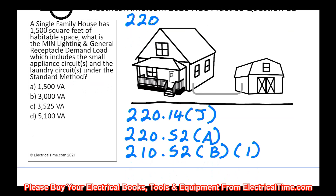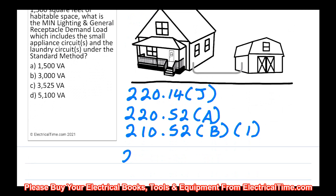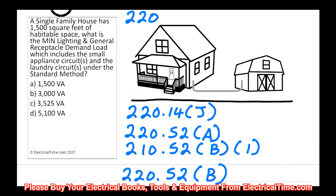Now let's look at 220.52B, which talks about the laundry circuit — not less than 1,500 volt-amps. When we're looking at a dwelling unit and talking about the minimum VA demand load, we're going to take that square footage. We're looking at the minimum for the lighting and the general receptacle demand load. In this question, we don't have the appliances, heating and air conditioning, motors, or all the other stuff that would be in the house. The information in this question is the information we have to use to answer it.